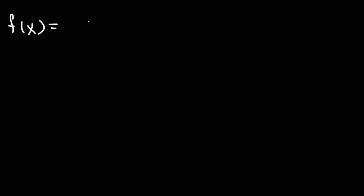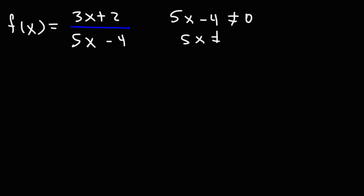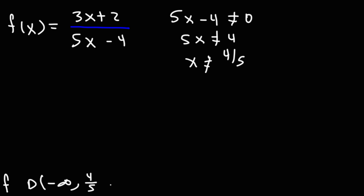Now let's work on one more problem. This time we're going to focus on a rational function. Let's say f of x is 3x plus 2 divided by 5x minus 4. Go ahead and find the domain of the inverse function. When dealing with rational functions, you can't have a 0 in the denominator. So we can say that 5x minus 4 cannot be 0. Adding 4 to both sides, then dividing by 5, we get that x can't be 4 over 5. So for f, the domain is going to be from negative infinity to 4 over 5, union 4 over 5 to infinity.